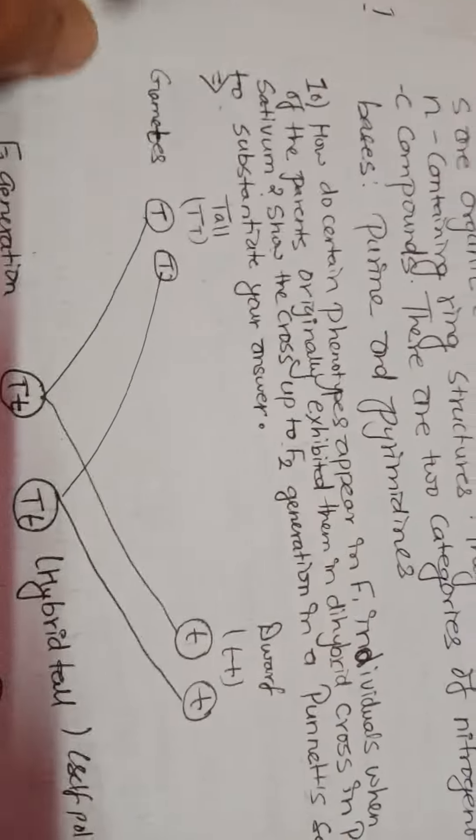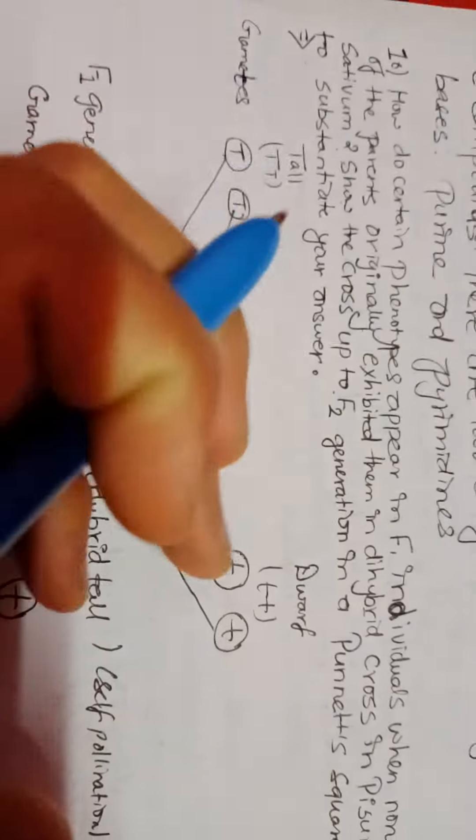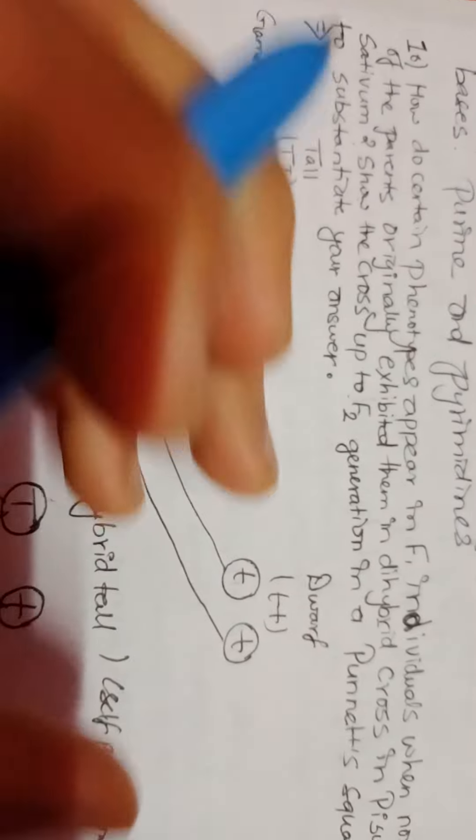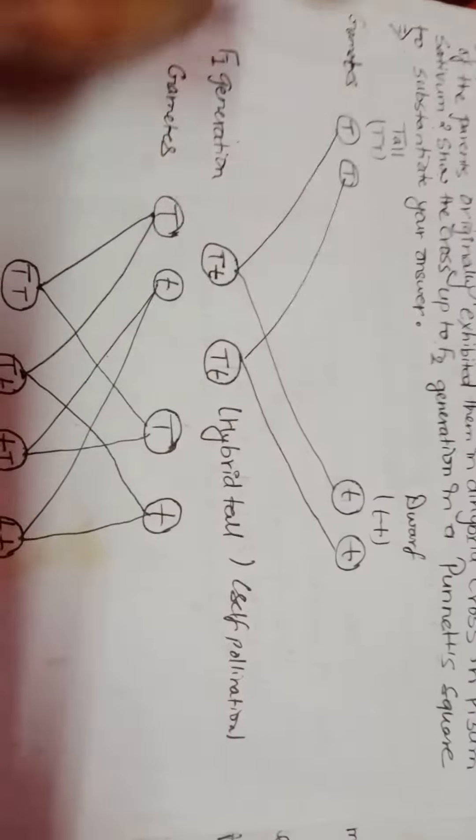First we have to take tall and dwarf. Tall TT, that will be, and small tt for dwarf. Now we need to cross it. Next one is F1 generation: hybrid tall, self-pollination. F1 generation gametes are TT and tt.